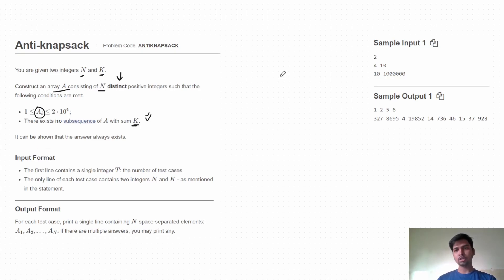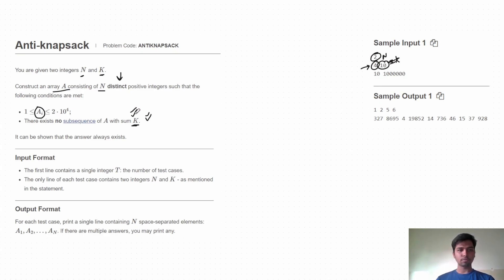In the input, we first get the total number of test cases, then for each test case we get two numbers: n, the size of the required array, and k — the target such that no subsequence of A should have sum equal to k. In the output we need to print that array A. Now let's discuss the approach.